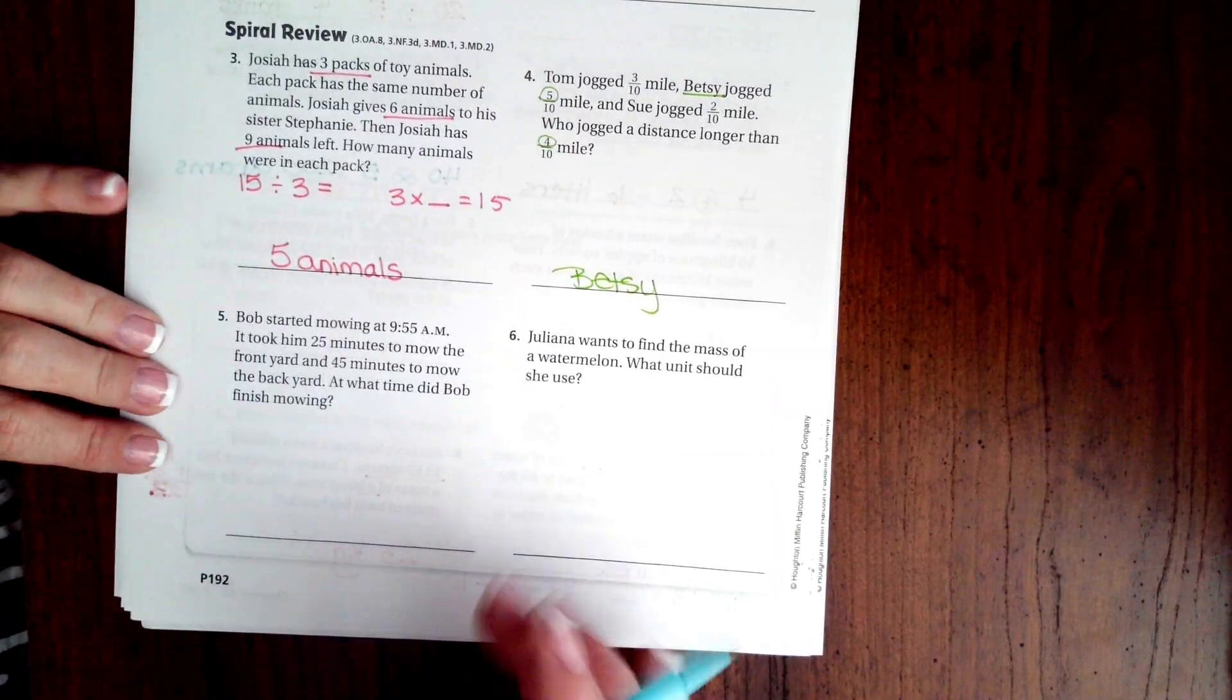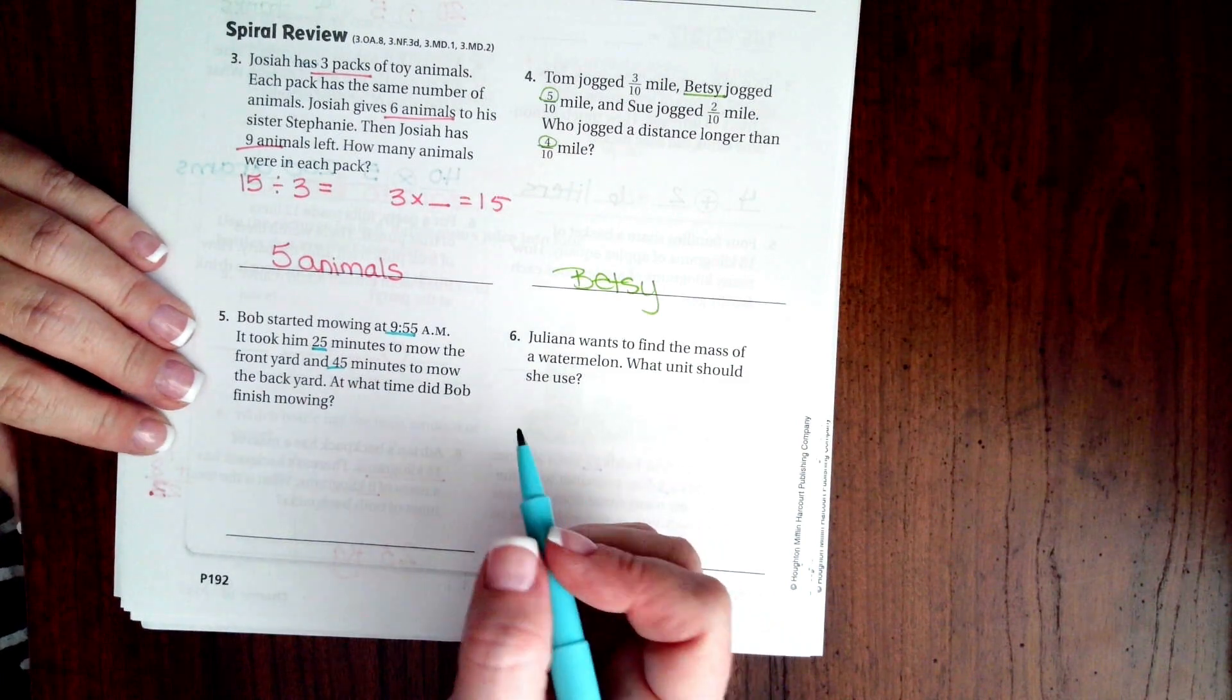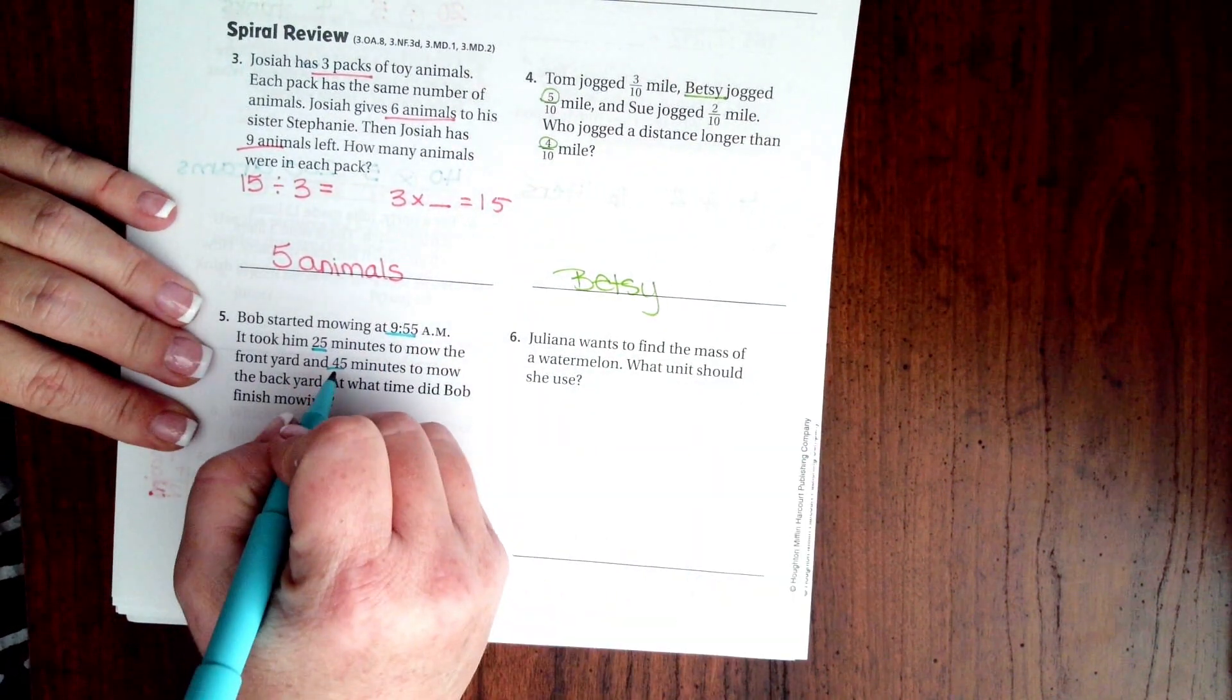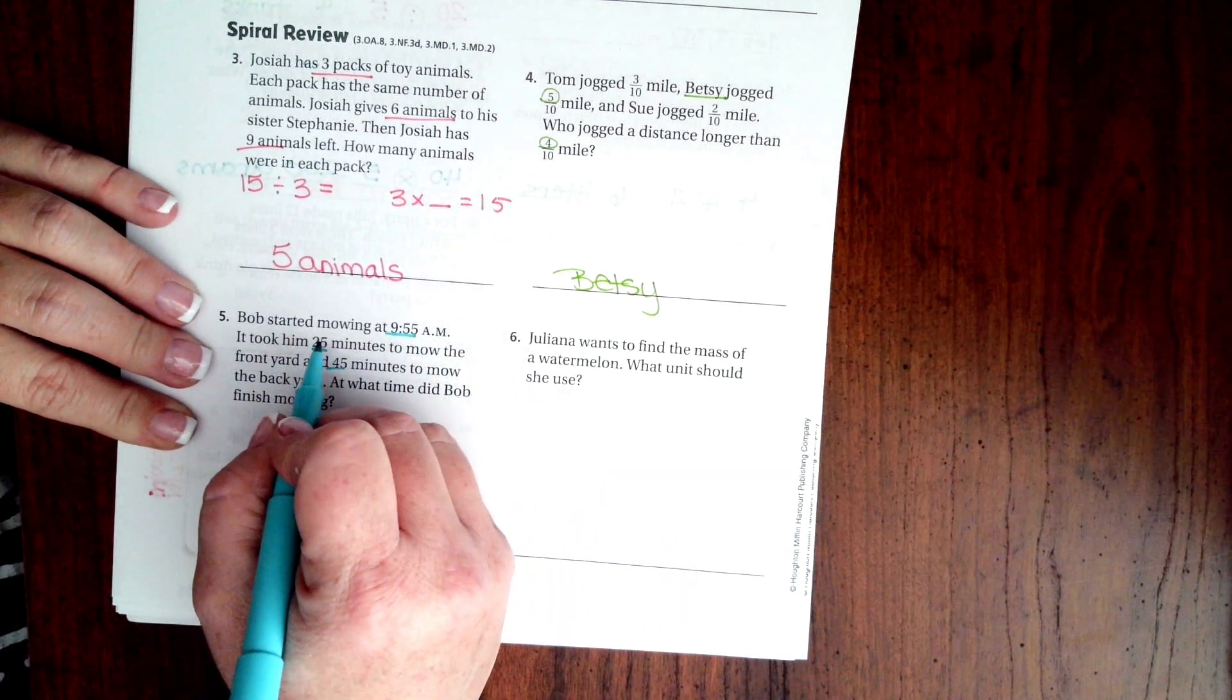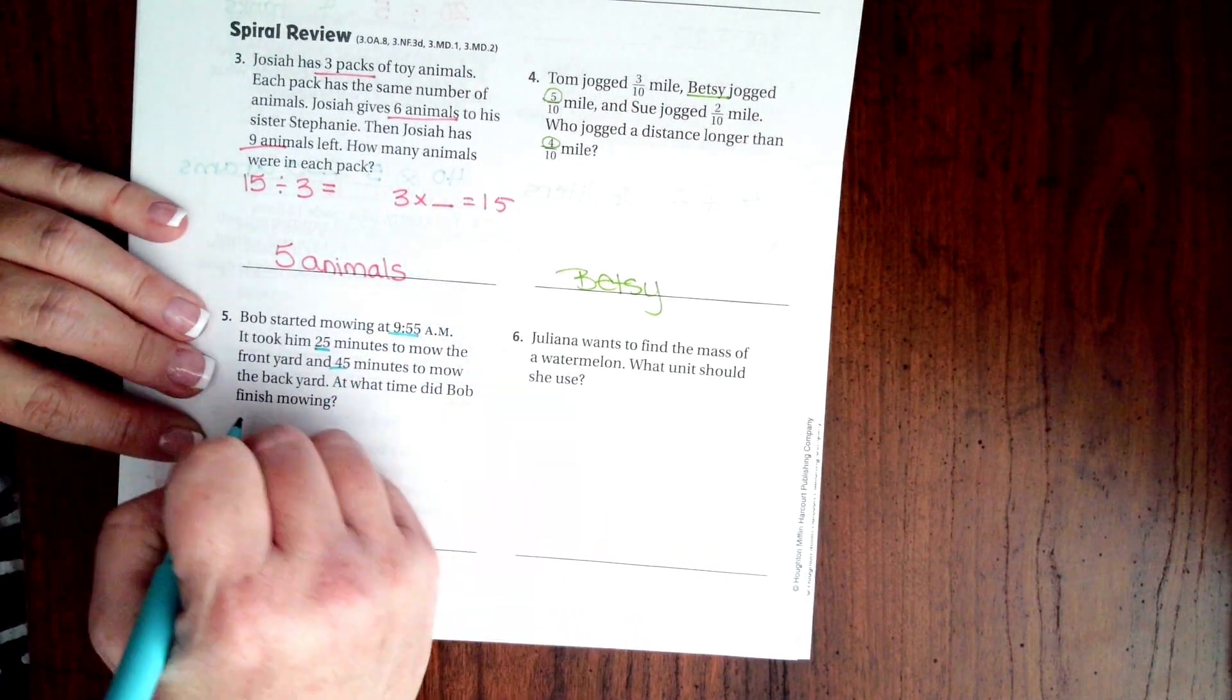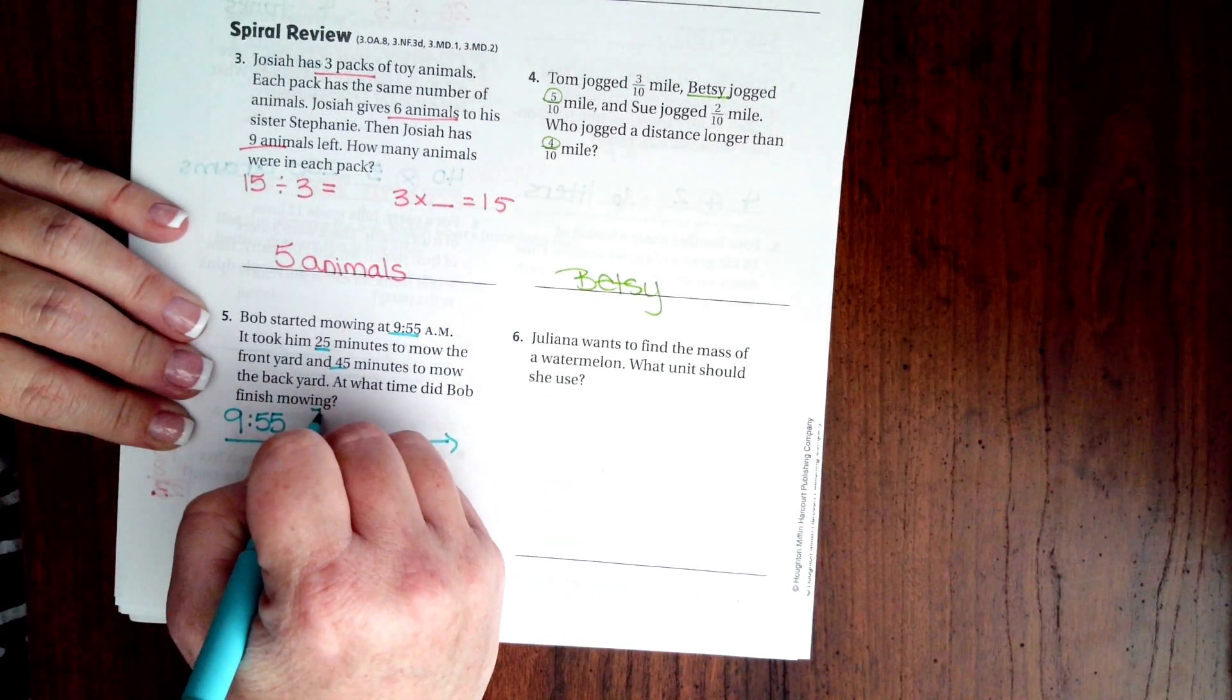Bob started mowing at 9:55 a.m. It took him 25 minutes to mow the front yard and 45 minutes to mow the backyard. What time did Bob finish mowing? First, I'm going to know how many minutes that I need to get past 9:55. So 25 and 45, that's 70. So I need to start at 9:55 and I need to go 70 minutes.